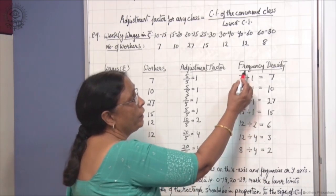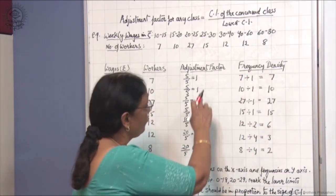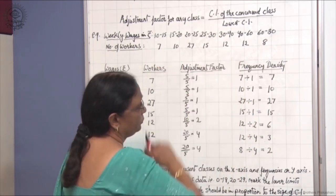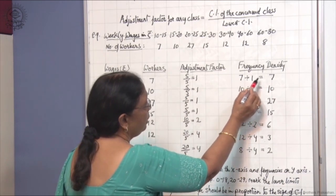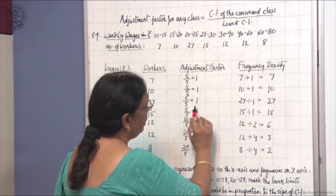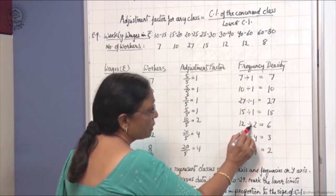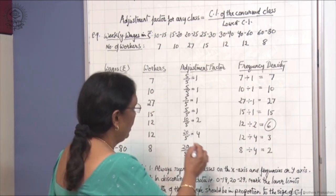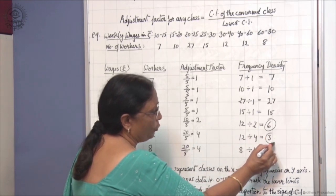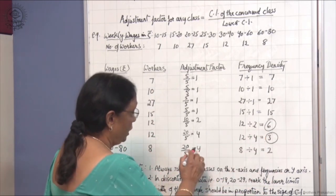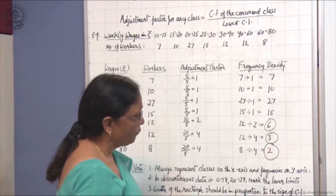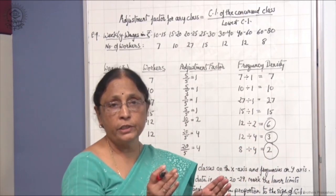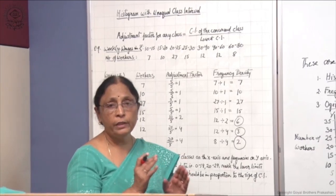Now we find the frequency density — we adjust the frequencies by dividing them by the adjustment factors. Frequencies are: 7 divided by 1 gives 7; 10 divided by 1 gives 10; the third is 1 so it remains the same; the fourth is also 1. Then frequency 12 divided by 2 gives adjusted frequency 6. Again, 12 divided by 4 gives adjusted frequency 3. Then 8 divided by 4 gives adjusted frequency 2. The frequencies have been adjusted; we cannot adjust the class interval, but the frequencies are adjusted to make the diagram accurate.